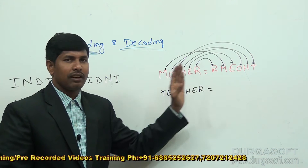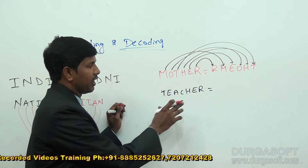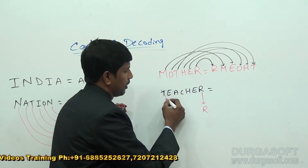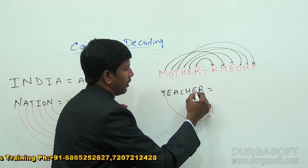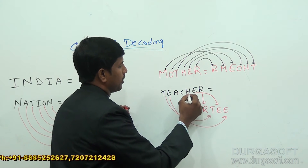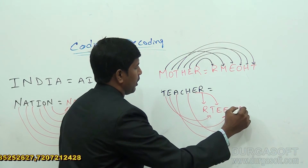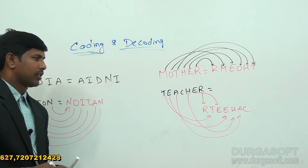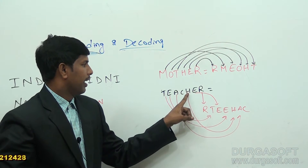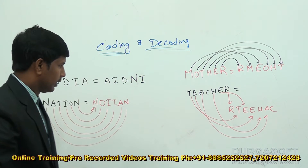The logic is first-last, first-last, first-last. So the code becomes R, T, E, E, H, A, C. In that way, we can understand the required answer easily.